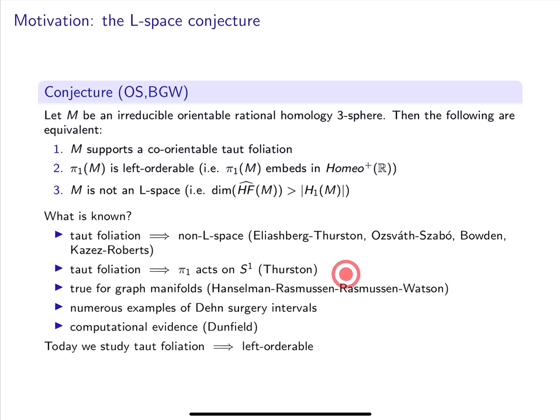Second, Thurston proved that a taut foliation gives rise to an action on a circle. This is promising, but it's strictly weaker than acting on a line. There's a homological obstruction to lifting an action on a circle to an action on a line. Third, we know that it's true for all graph manifolds.